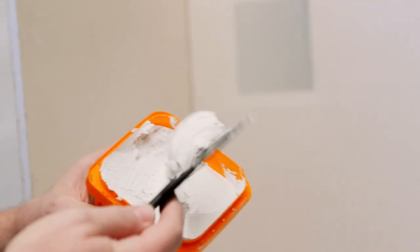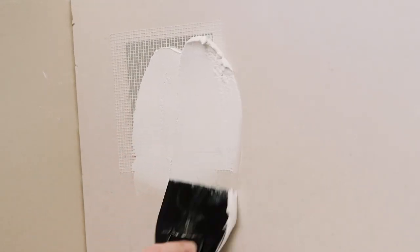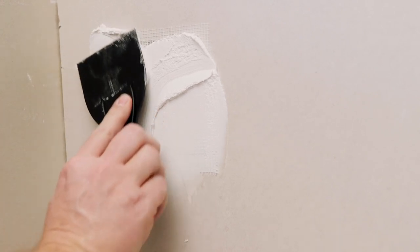Apply Gorilla Wall Repair over the patch with the putty knife, covering the mesh completely. Apply thinner layers towards the edges of the patch, so the patched area blends in with the wall.